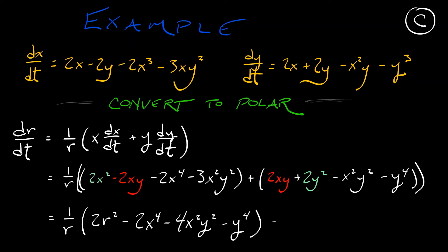And I'm going to tell you that what you get in the end is 2r times quantity 1 minus r² minus ½r²sin⁴θ. And now with that, we can build a trapping region.